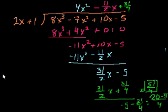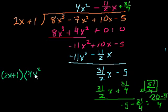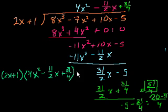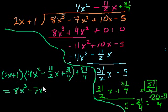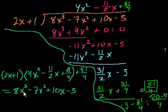Another way to write this relationship: 2x plus 1 times the quantity 4x squared minus 11 halves x plus 31 over 4, plus the remainder minus 51 over 4, equals 8x to the third minus 7x squared plus 10x minus 5. I hope that helps — see you in the next video.